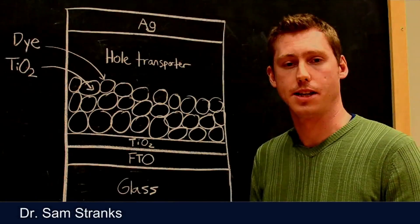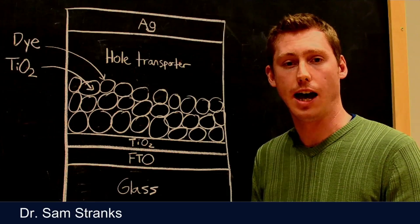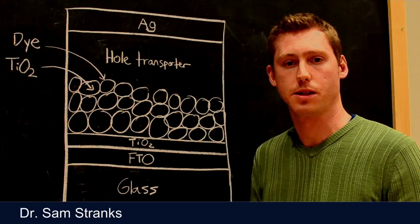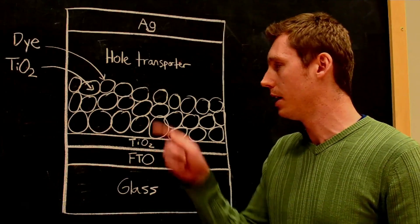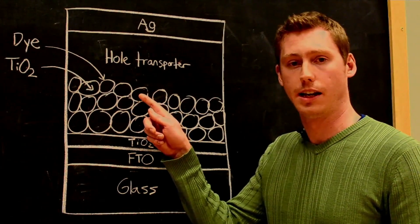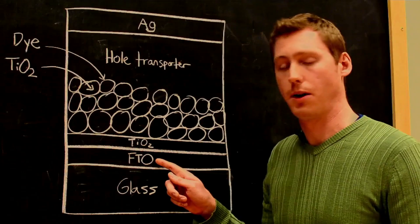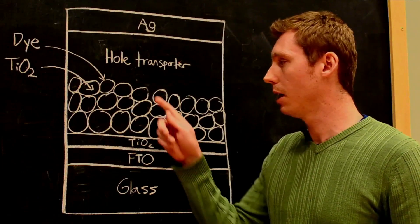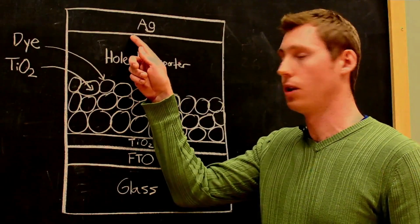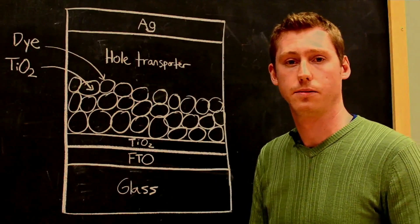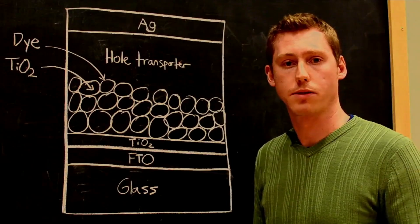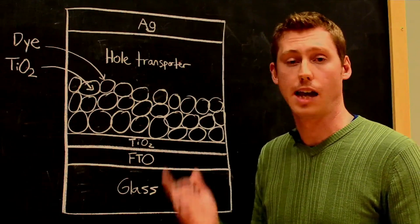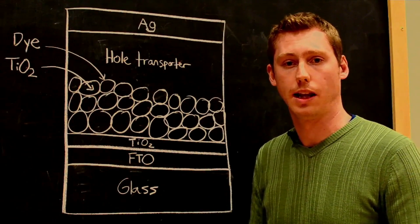In a traditional dye-sensitized solar cell architecture, the dye is adsorbed onto a mesoporous metal oxide titania electrode. The electron is injected into the titania and transported to the transparent anode, fluorinated tin oxide or FTO. Meanwhile, the hole is transported through the liquid hole transporter to the cathode. Early attempts using perovskites in these solar cells were unstable due to the degradation caused by the liquid electrolyte.